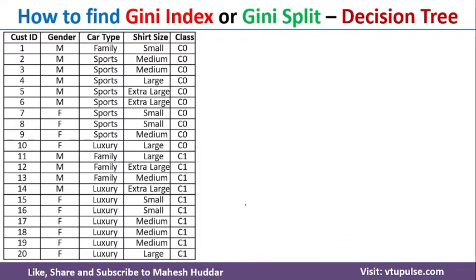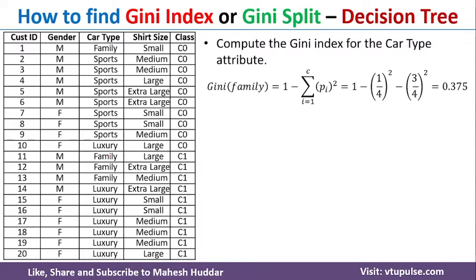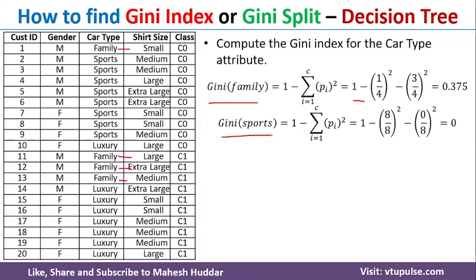Next, we calculate Gini for car type, which has three possibilities: family, sports, and luxury. For family, there are 4 examples — 1 is C0 and 3 are C1, so Gini(family) = 1 − (1/4)² − (3/4)². For sports, there are 8 examples and all are C0, so the probability of C1 is 0/8, giving Gini(sports) = 0.